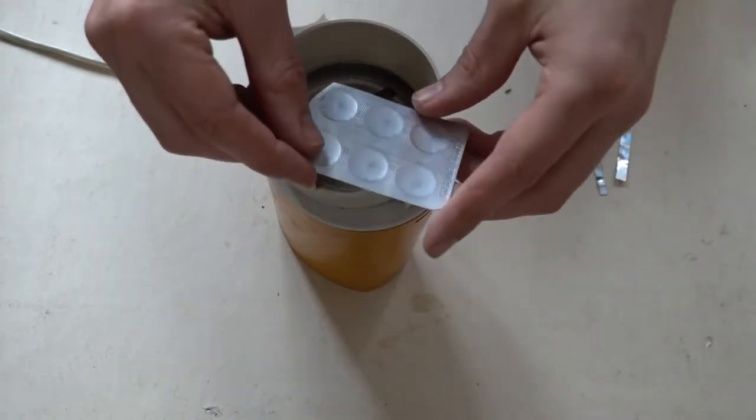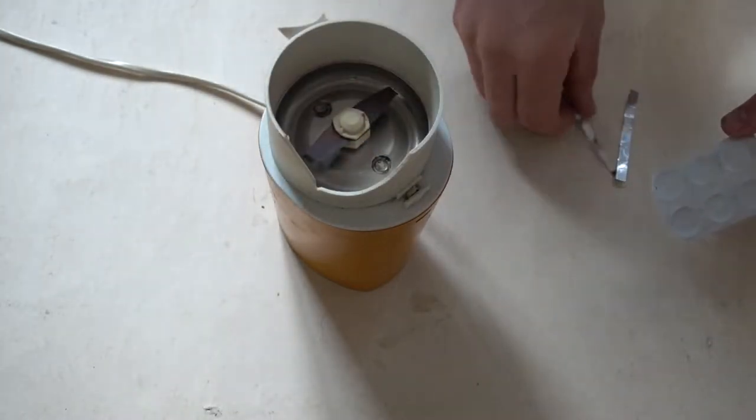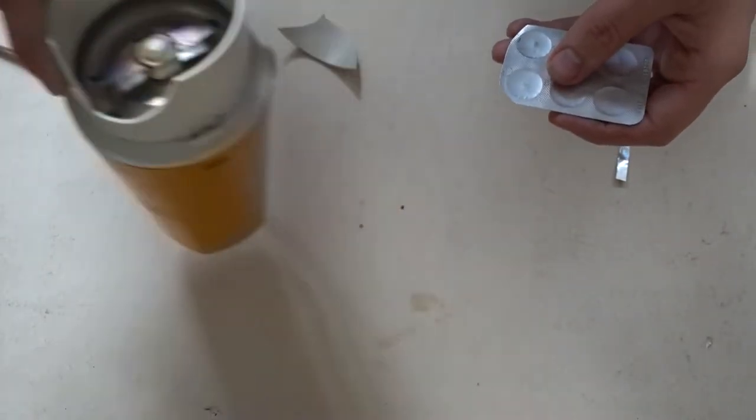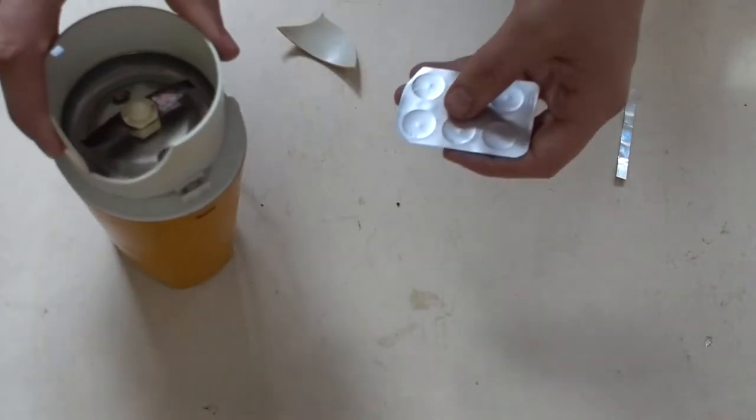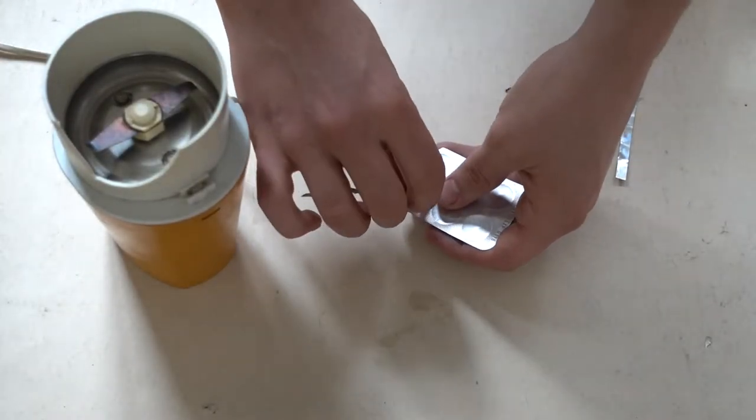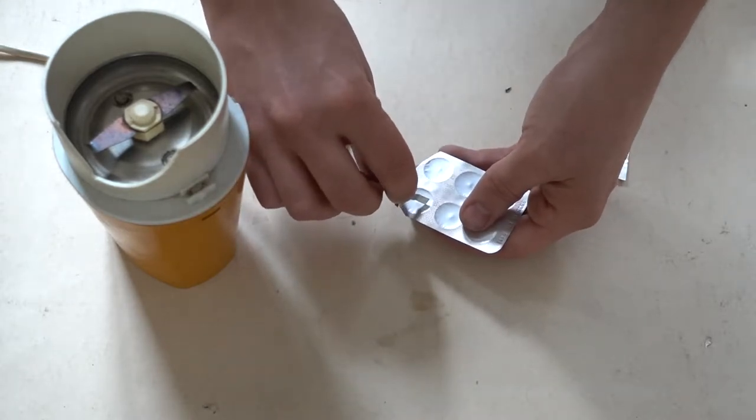So today I'm going to be gluing a coffee grinder which broke using this blister pack. I use my strip of sheet metal to cut open the blister. It's not too hard.